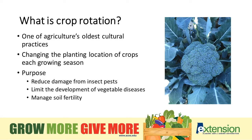What is crop rotation? Well, it's one of the oldest agricultural practices that we have, and it involves changing the planting locations of different crops throughout each growing season. We do this to reduce damage from insect pests, limit the development of vegetable diseases, and also manage soil fertility.